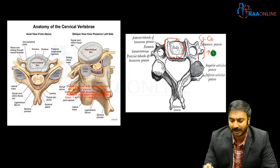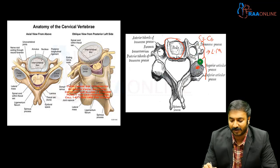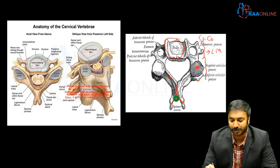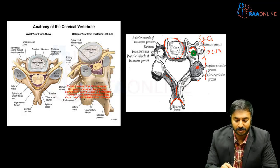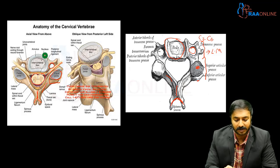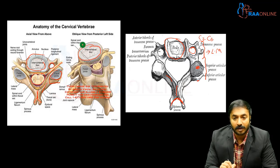The lateral mass includes the foramen transversarium and the facet region. The superior facet is seen above and the inferior facet below. The lamina and the bifid spinous process are also visible. The foramen transversarium harbors the vertebral artery. You can also see the spinal cord with nerve roots coming out, along with the facet joints with the lateral masses, the disc, and the vertebral body.